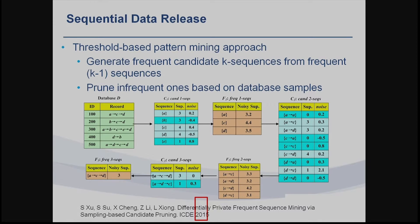We treat patient encounter data, genome sequence data, or longitudinal data as a set of sequences, and we want to preserve the frequent sequential patterns. We build frequent K-sequences from frequent K−1 sequences — for example, if pattern A is frequent,